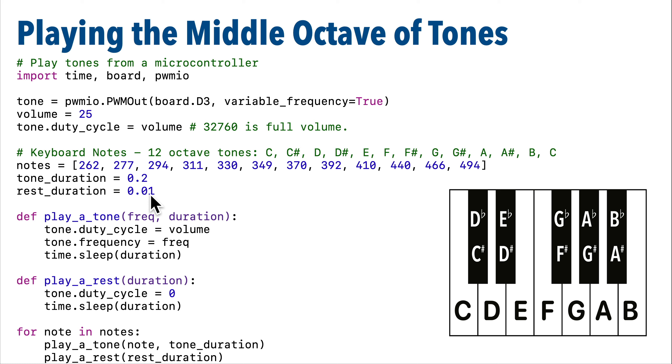I've also written two functions that you can reuse to play notes or rests. Play_a_tone takes two values: a frequency, which is the note, and the duration, which is the length of time we should play that note for. The first line here turns up the volume, and that's because we might have turned the volume off to produce the rests or the spaces between the notes. So make sure you turn the volume on, then we're going to play the note by setting the frequency of our PWM out object, which we call tone, and then we carry that note for a given length of time by sleeping for the duration of the note.